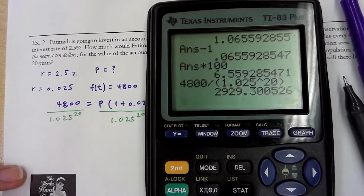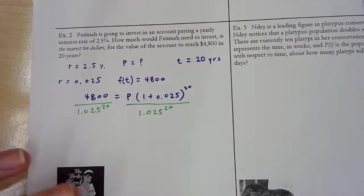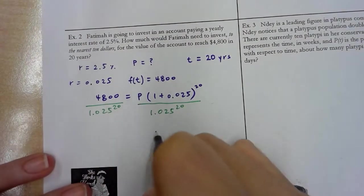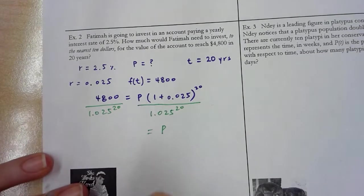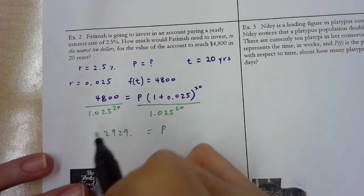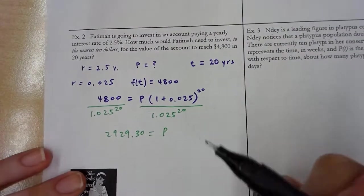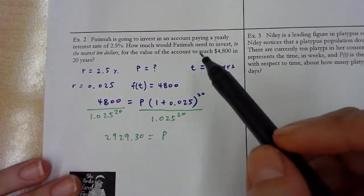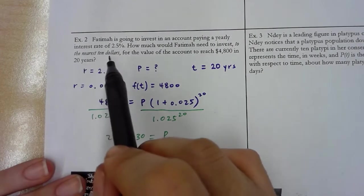And bam, $2,929.30. So usually when we talk about money, we would round it to the nearest cent.